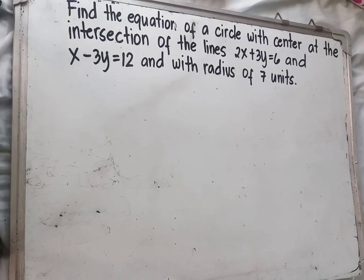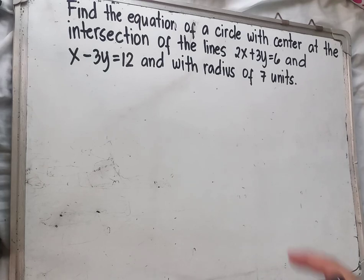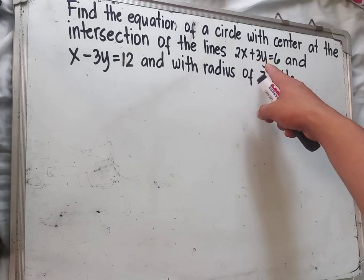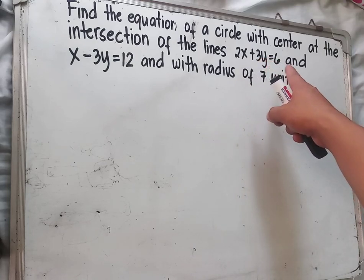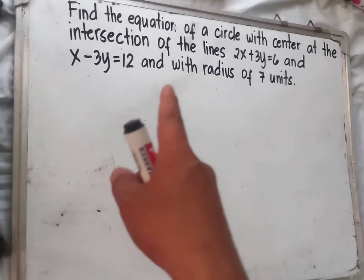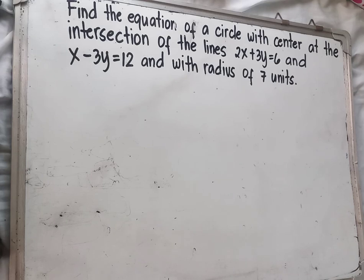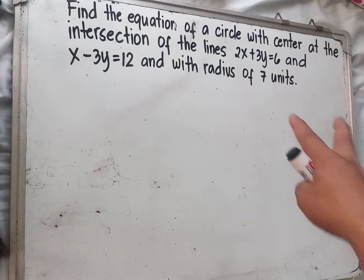Welcome to my channel. Today we will discuss the equation of a circle — another problem on how to find the equation of a circle. Based on the given: find the equation of a circle with a center at the intersection of the lines 2x plus 3y equals 6 and x minus 3y equals 12, and with a radius of 7 units.